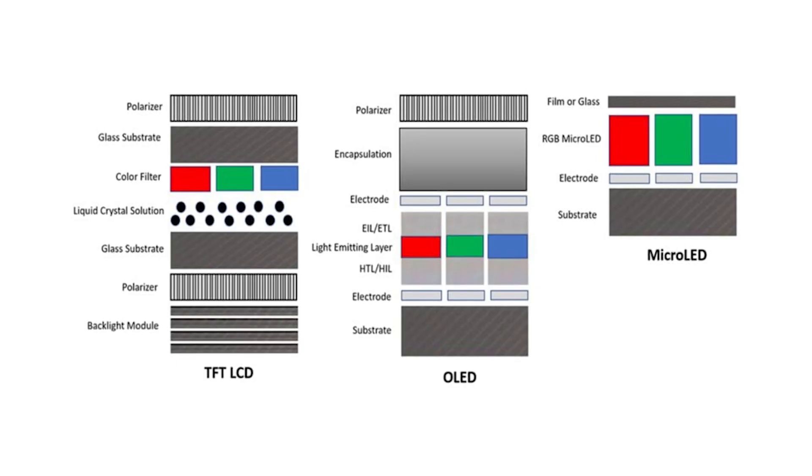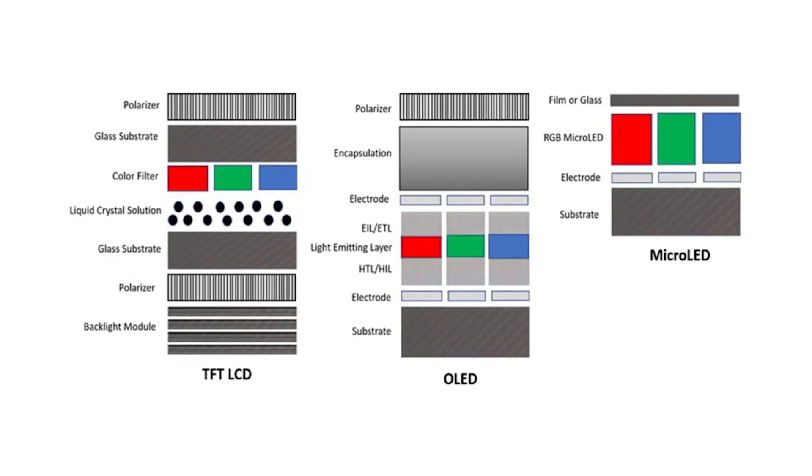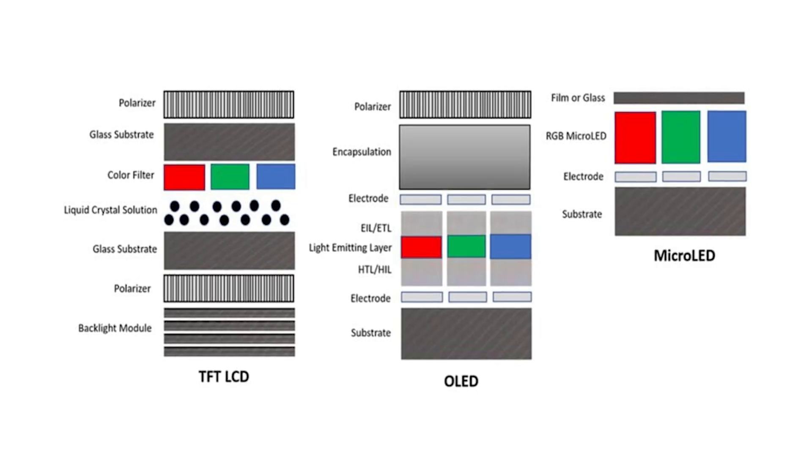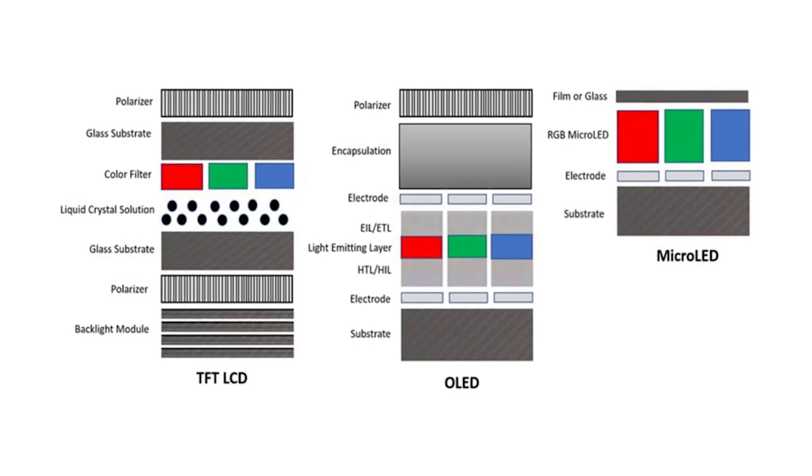Unlike LCD TVs, no separate backlight or color filtering layer is needed because the micro LEDs themselves generate both the light and the color for the image. Conceptually, micro LED technologies are similar to OLED TVs, as both use self-emissive pixels to create the image. However, micro LED pixels are inorganic, avoiding issues such as color degradation over time, screen burn-in from prolonged static images, or temperature-related brightness limitations. Although, OLED has largely addressed high brightness performance in recent years, just so you know.